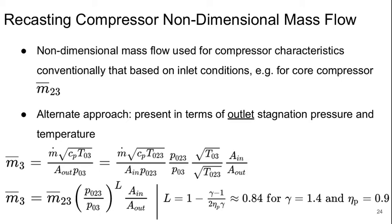Another useful thing to do is to recast our compressor non-dimensional mass flow in different terms. Normally, when we make compressor characteristics, we plot against non-dimensional mass flow based on the inlet condition—for a core compressor, that would be M-bar at station 2.3. An alternative approach is to present it in terms of the outlet stagnation pressure and temperature. M-bar 3 is the associated non-dimensional mass flow based on T0.3 and P0.3, and we can relate this to what's going on by looking at variations in the properties, which has to do with the efficiencies. We get the relationship that M-bar 3 equals M-bar 2.3 times the pressure ratio to some exponent L, times an area ratio of the flow areas across the component.